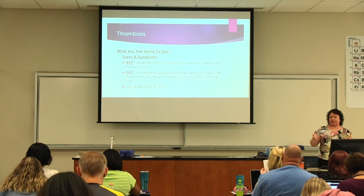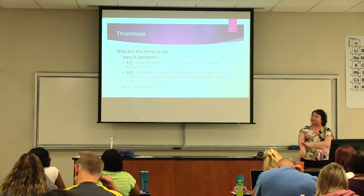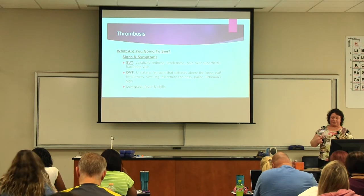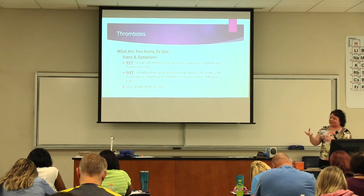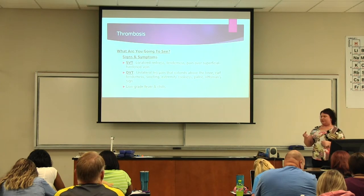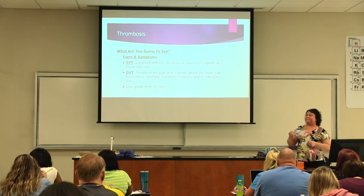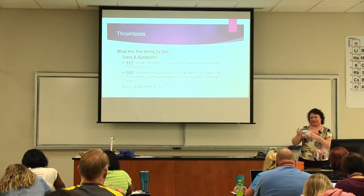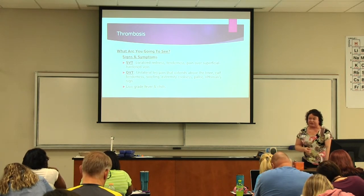What are you going to see as a nurse? For an SVT, you'll see localized redness and tenderness over the superficial vein. For a DVT, you traditionally see unilateral leg pain, usually in just one leg, extending above the knee, mainly in the calf area with tenderness and swelling. You can also see a positive Homan's sign — when you dorsiflex the foot and the patient feels pain in the calf area. Fever and chills can also be signs.